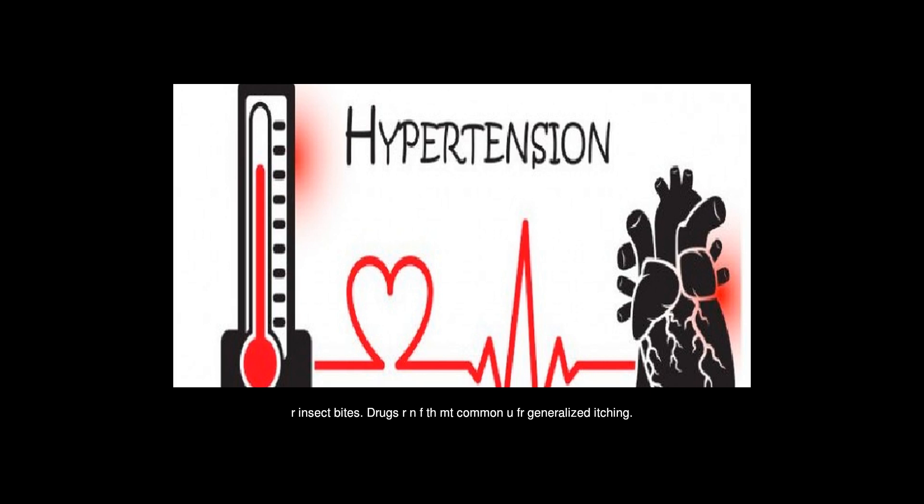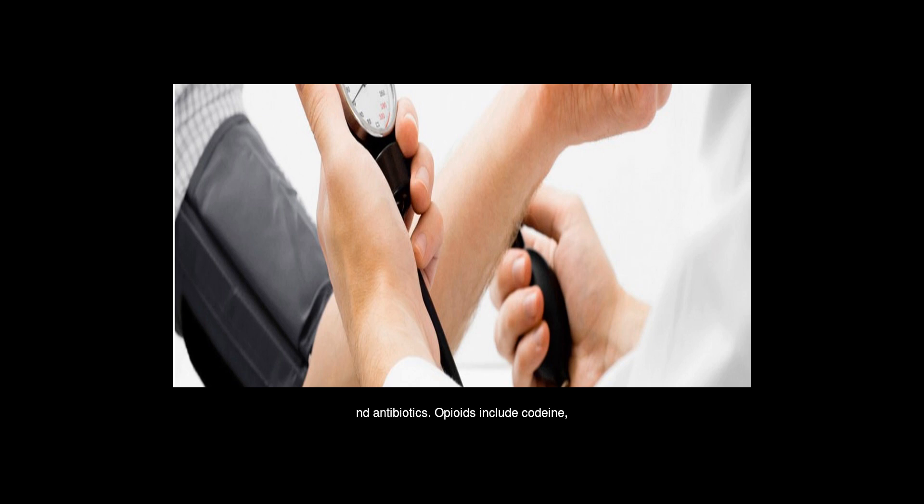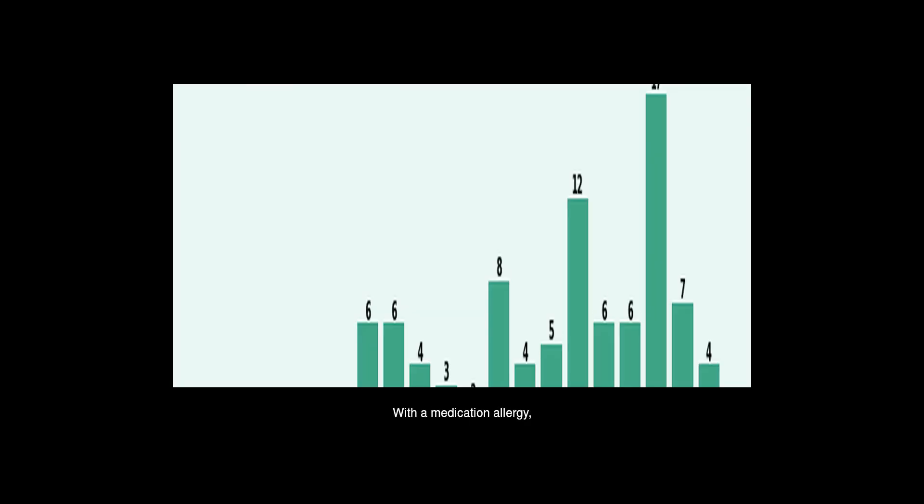Drugs are among the most common causes of generalized itching. Some of the medications that are associated with generalized itching are aspirin, opioid pain relievers, and antibiotics. Opioids include codeine, hydrocodone, and oxycodone. With a medication allergy, a rash or hives may be present.